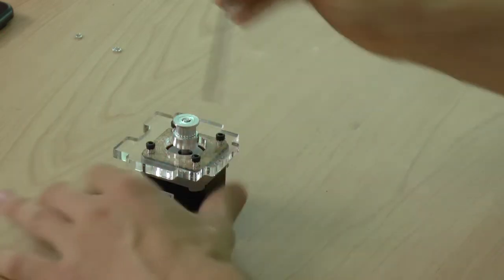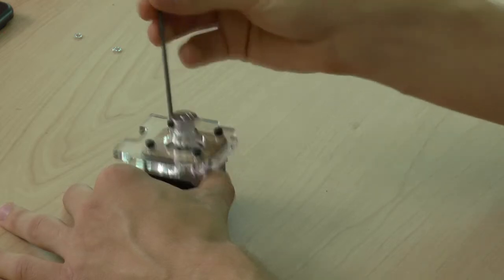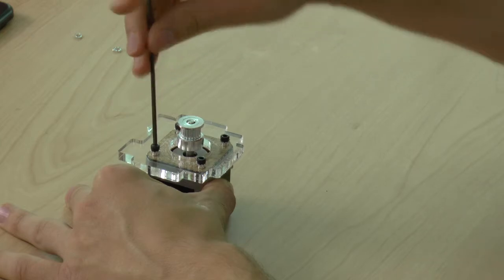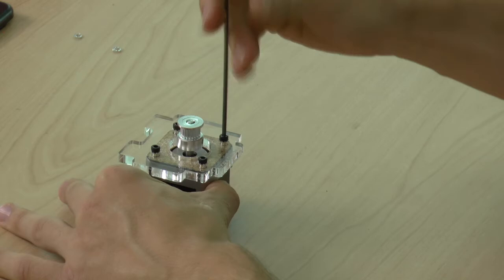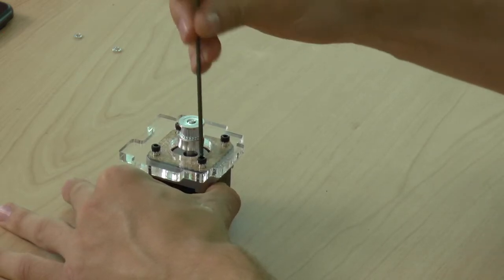And now for the final step, start with one bolt, tighten it a bit and then go diagonal and tighten that one a bit. Pick another one, tighten it a bit, diagonal, tighten it another bit. So you're going to be going in small increments all around the part.